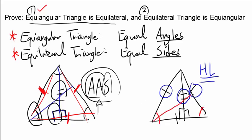By the same reasoning, dropping a perpendicular here, you can prove that this angle and this angle are the same. And since you have three equal angles, you know this triangle is equi-angular. So we have proved both of our assertions.